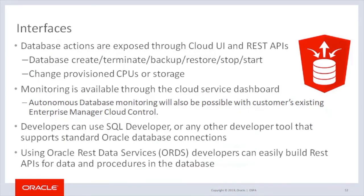Oracle database functions are exposed through easy-to-use screens, achieving most functions. Because a lot of database applications are part of a much larger ecosystem, control through scripting or other tools is needed. Autonomous Database provides REST APIs to perform any supported operation — for example, database termination, backup, restore, start and stop, or scaling CPUs or storage — which can be performed either through the UI interface or the REST APIs. Both of these will be discussed in detail in future modules.